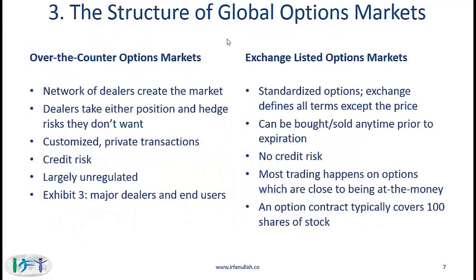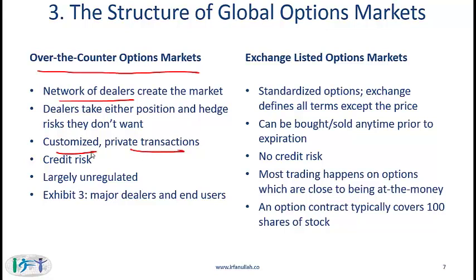Coming now to the structure of global options markets. Options are traded both on exchanges and over-the-counter markets. In OTC options markets, as with forward markets, these consist of a network of dealers who create the OTC market. Dealers can take either a long or short position and if not happy with the exposure, they can hedge by taking an opposite position with another party. OTC contracts are customized, they are private transactions, and since they are private, there is credit risk. The OTC market is largely unregulated.